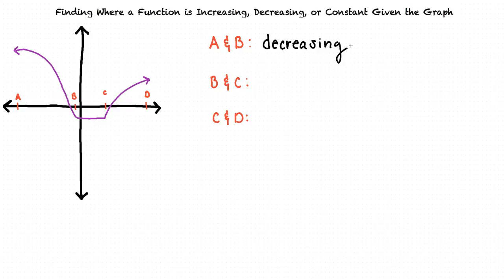You're right. If we trace this section of the graph, we can see that the graph is neither rising nor falling. It is horizontal. This tells us that this part of the function is constant.